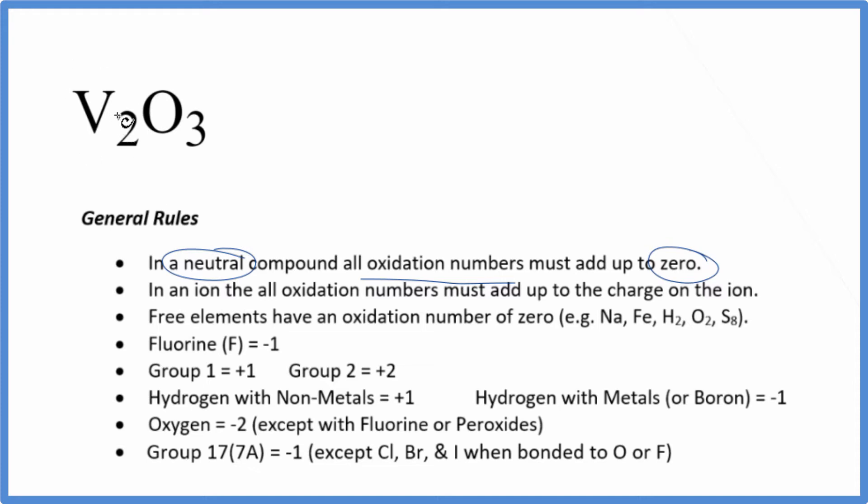For the vanadium we don't know what that is, let's call that X. But oxygen, that's going to be a minus two. There are just a few exceptions where it isn't minus two. So minus two for each oxygen.